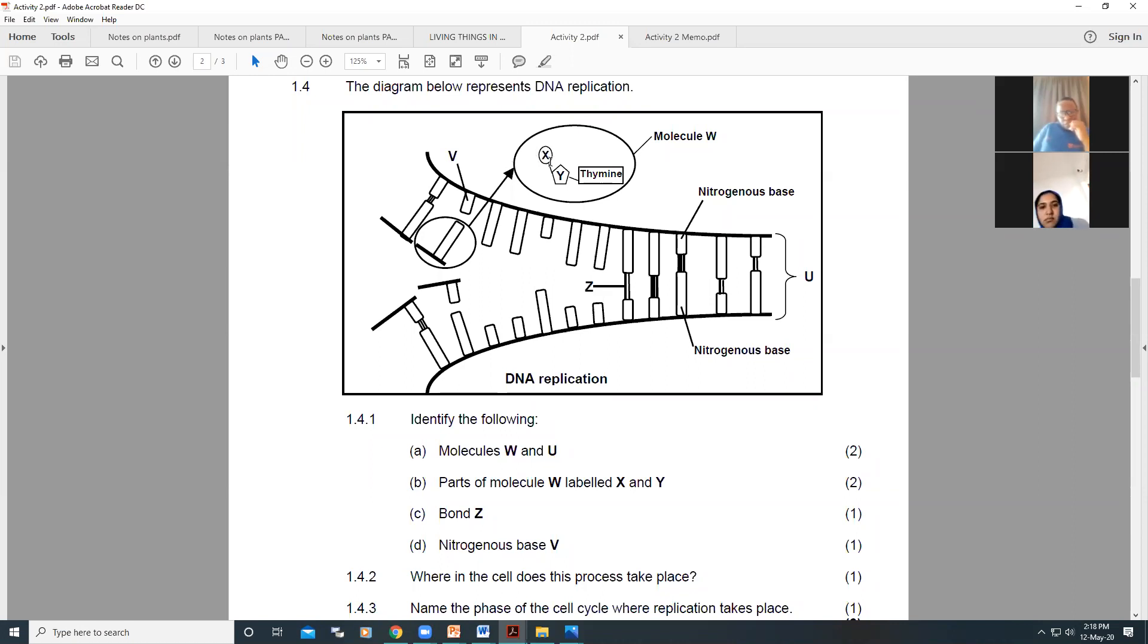It is going to be one of the questions that will be asked in the question itself. So you should have the answer there. X is the phosphate molecule. Many learners write phosphorus, which is incorrect. It's not phosphorus. It's a phosphate.